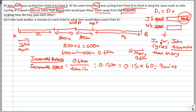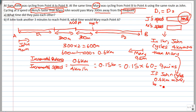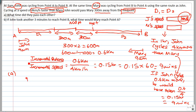In one hour, John cycles 4 km more than Mary. So if John cycles 0.6 km more than Mary — which is this particular scenario — how long would that take? 0.6 divided by 4 equals 0.15 hours, which is 0.15 times 60 equals 9 minutes. So John would have taken 9 minutes for that portion of the journey.